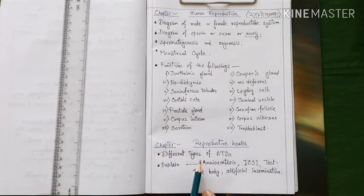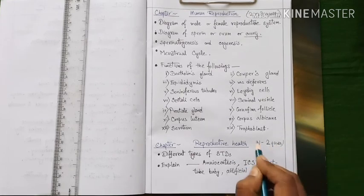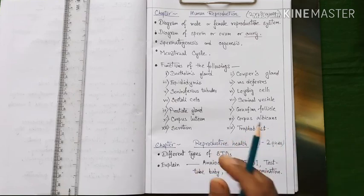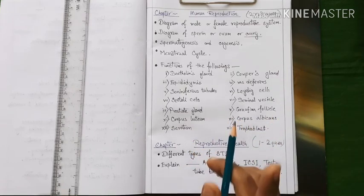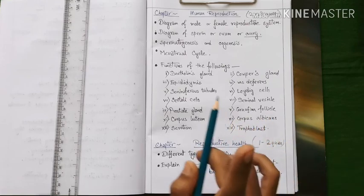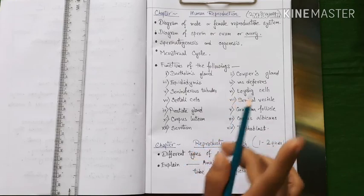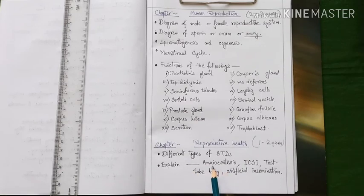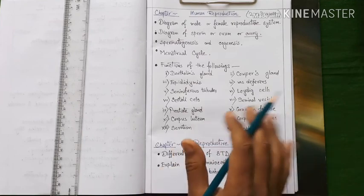Next we move to the last chapter under this unit, chapter reproductive health. You may also expect one to two questions from this chapter. The important topics under this chapter is different type of STDs. STDs means sexually transmitting diseases and you need to study the name of different STDs, the causative agents of STDs, mode of transmission of these diseases as well as prevention of these diseases. These are very very important and any one name of the sexually transmitting diseases will certainly come in the exam. Next you need to prepare notes on the topics like amniocentesis, ICSI that is intracytoplasmic sperm injection, test tube baby that is IVF and artificial insemination. These topics are very very important for exam purpose.